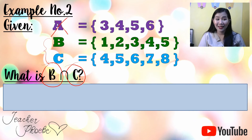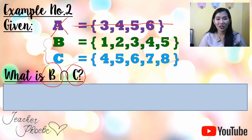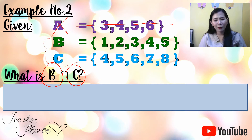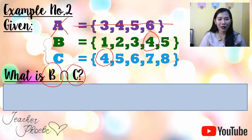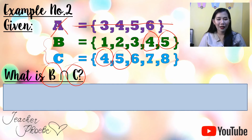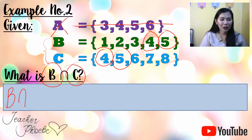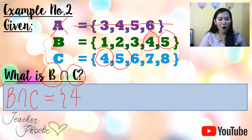We do not look at A, so we set that aside. We only look for common elements between B and C. Check: 1 — no match in C; 2 — no match; 3 — no match in C; 4 — match; 5 — match; 6 — no match in B; 7 — no match; 8 — no match. Therefore, the intersection of B and C is equal to {4, 5}.